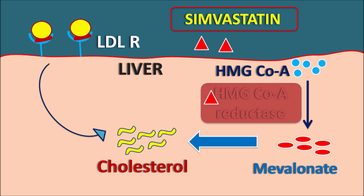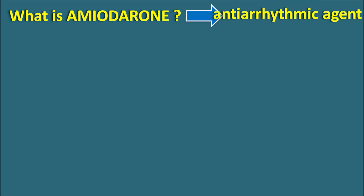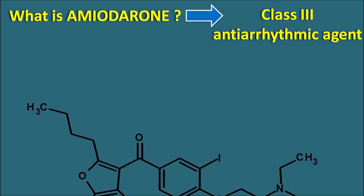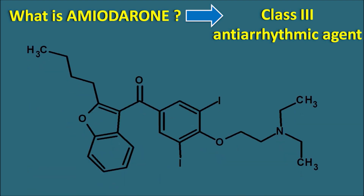At any of these steps, amiodarone cannot interact, so amiodarone is not producing any pharmacodynamic interaction. Therefore, the interaction of simvastatin with amiodarone may be related to a pharmacokinetic interaction. Now let us see what amiodarone is. Amiodarone is a class 3 antiarrhythmic agent. Antiarrhythmic agents are classified into four classes based on the Vaughan Williams classification. This drug has a large structure with iodine groups attached to the phenyl ring.